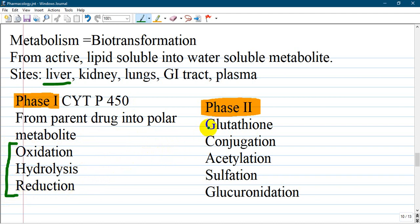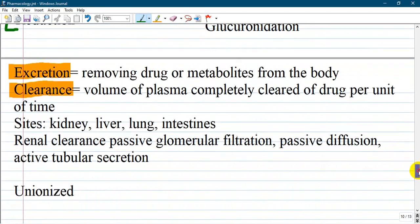In Phase 2, glutathione, glucuronidation, acetylation, sulfation and glucuronidation of substances occur. They become water-soluble and very inactive and can be eliminated easily through the kidney.